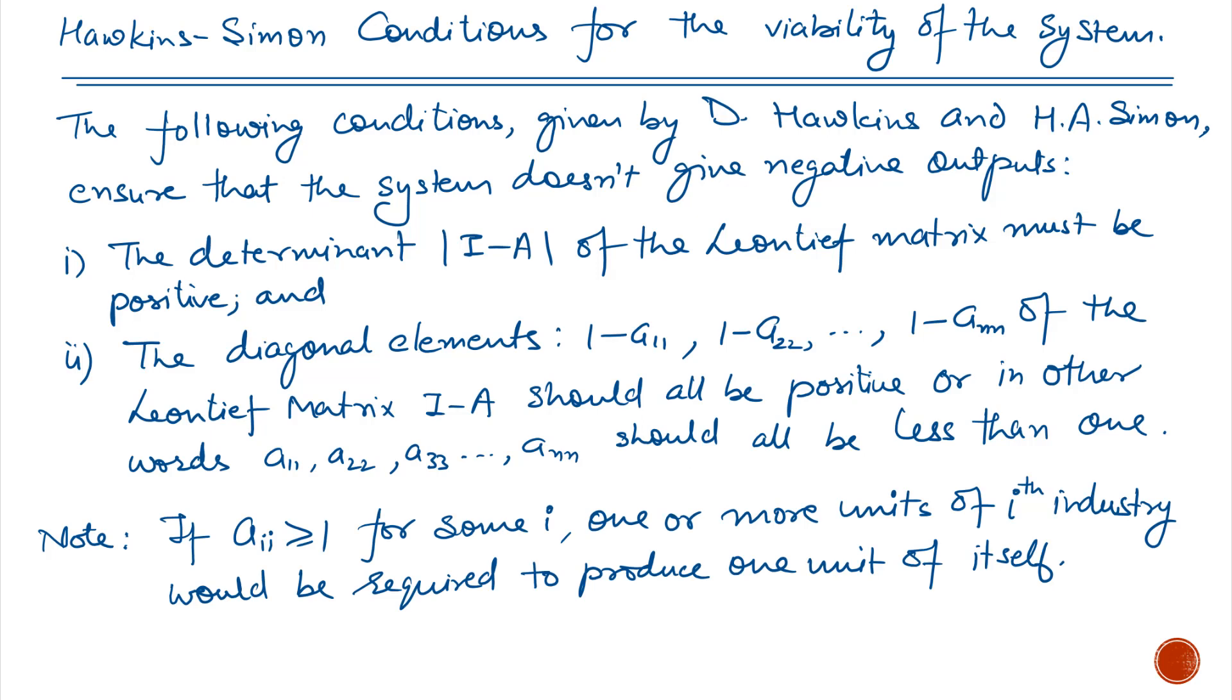Hawkins-Simon conditions for the viability of the system. Hawkins-Simons provide two conditions which ensure that the system does not have negative output. First, the determinant of I minus A of the Leontief matrix must be positive, and the diagonal elements 1 minus A11, 1 minus A22, and so on.